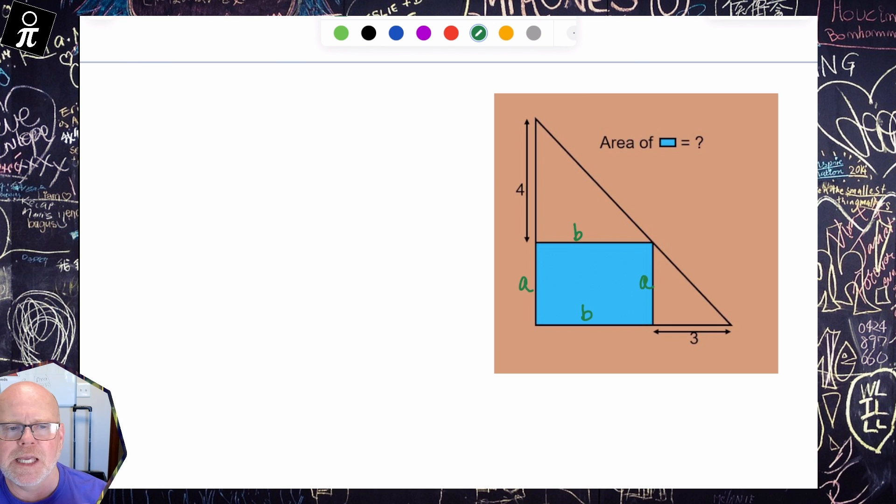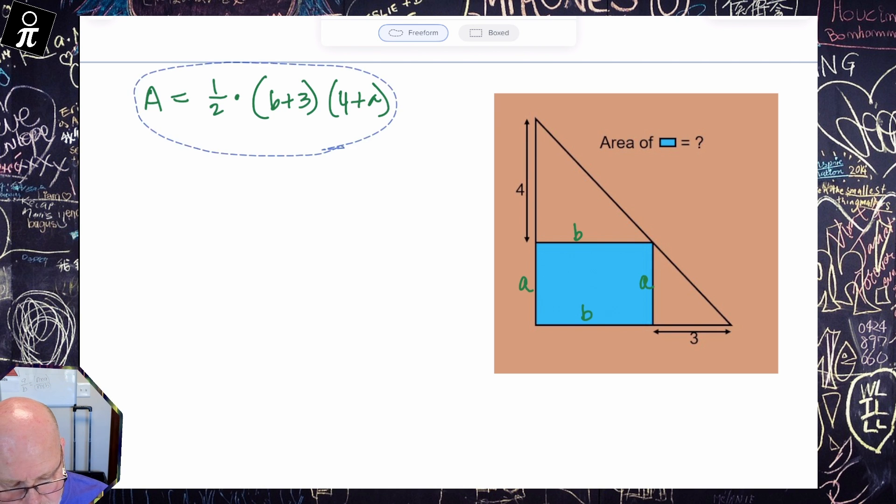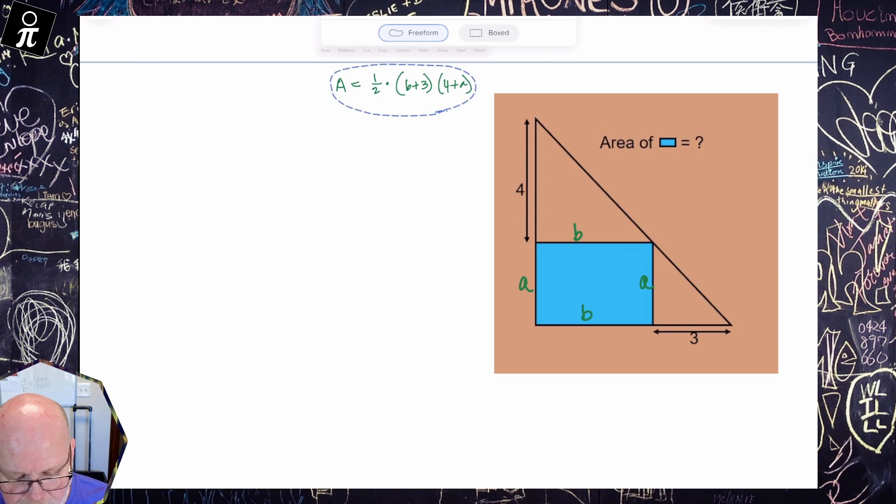All right, so we know that the area of a triangle is base times height divided by two or one half times the base times the height. All right, so I can see that the base is B plus three. I can see that the height is four plus A. So one way to find the area of this triangle is to say one half times the base, which is B plus three, times the height, which is four plus A. That's one way to find the area. And I'm going to sit on that for a little bit. That's one way to find the area of the triangle.